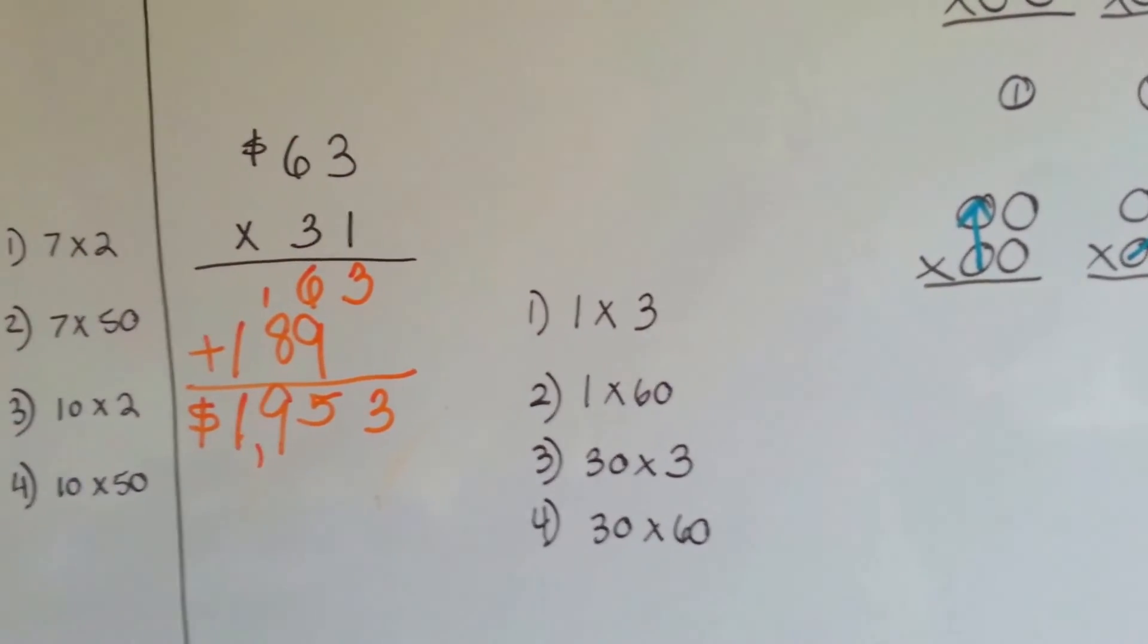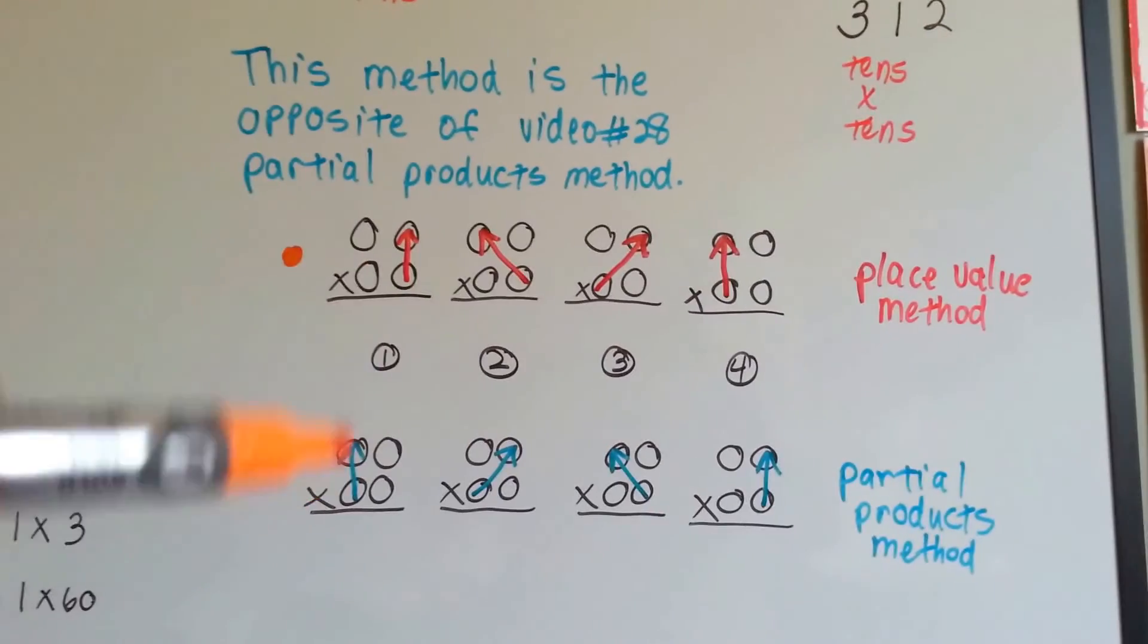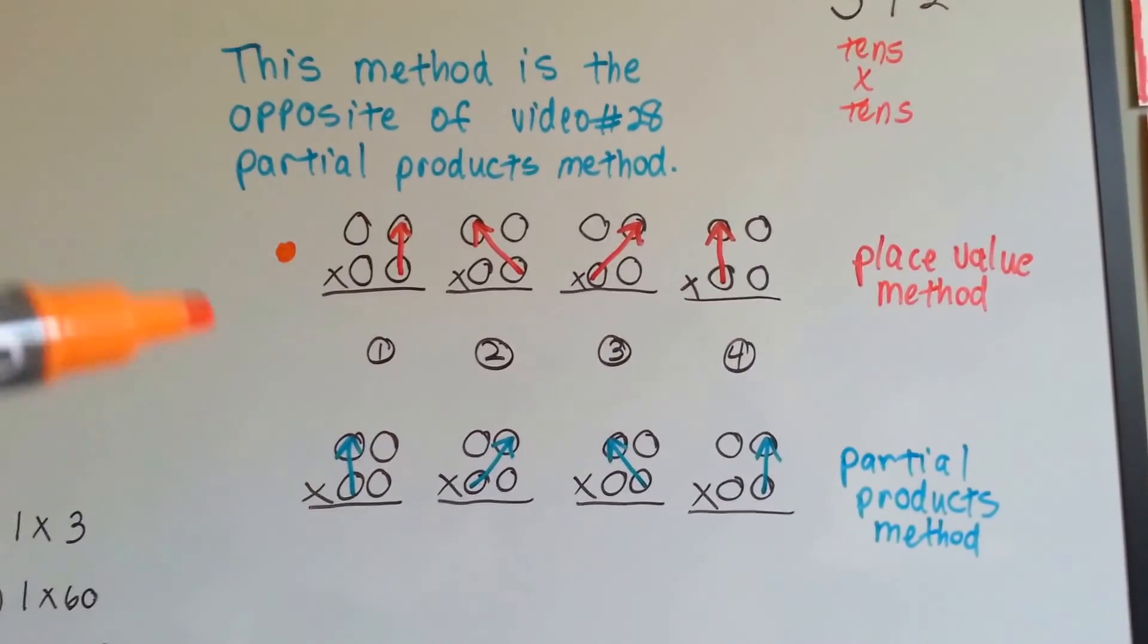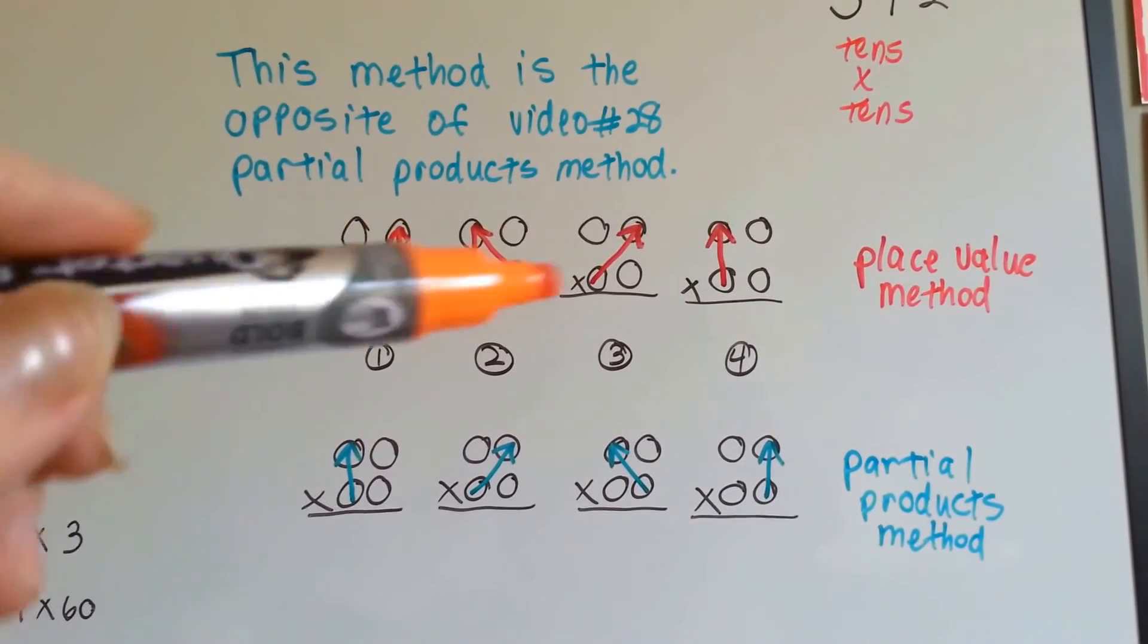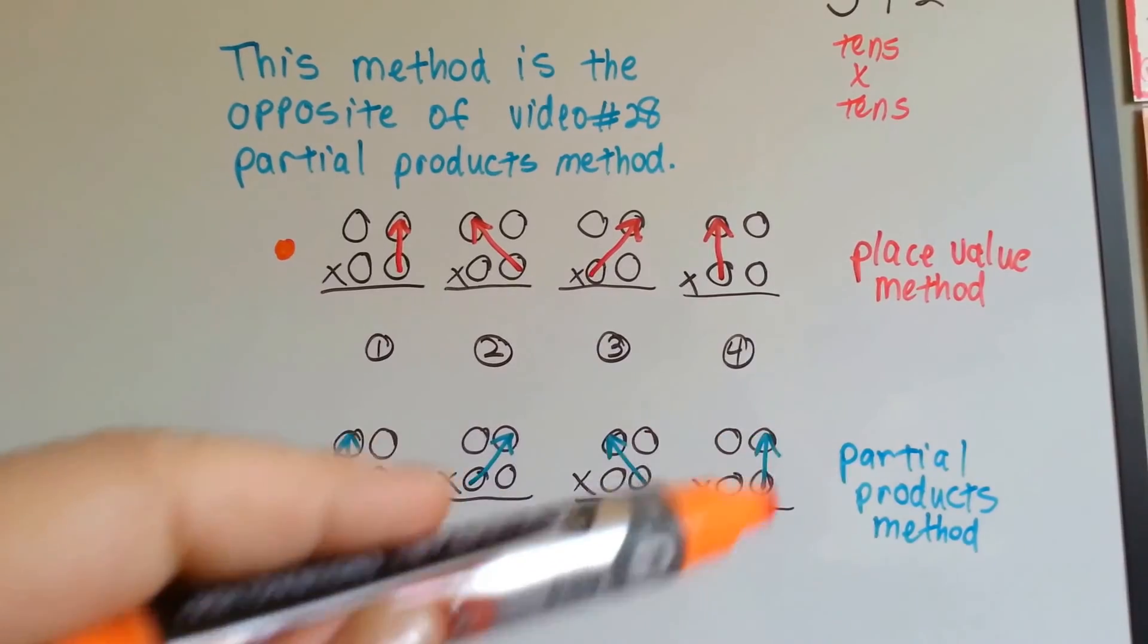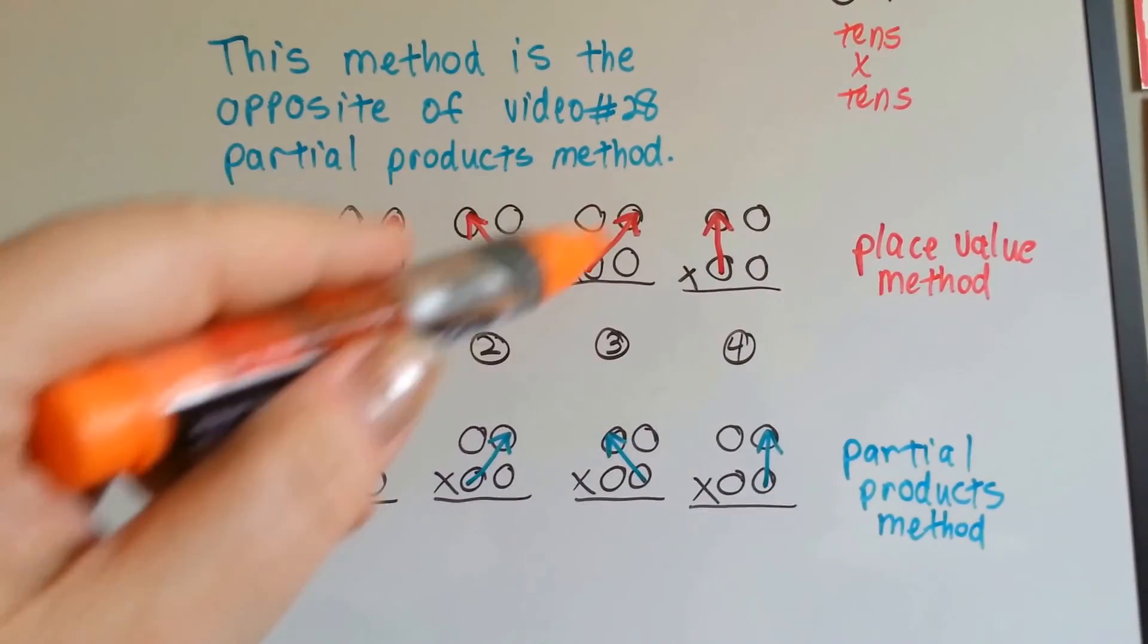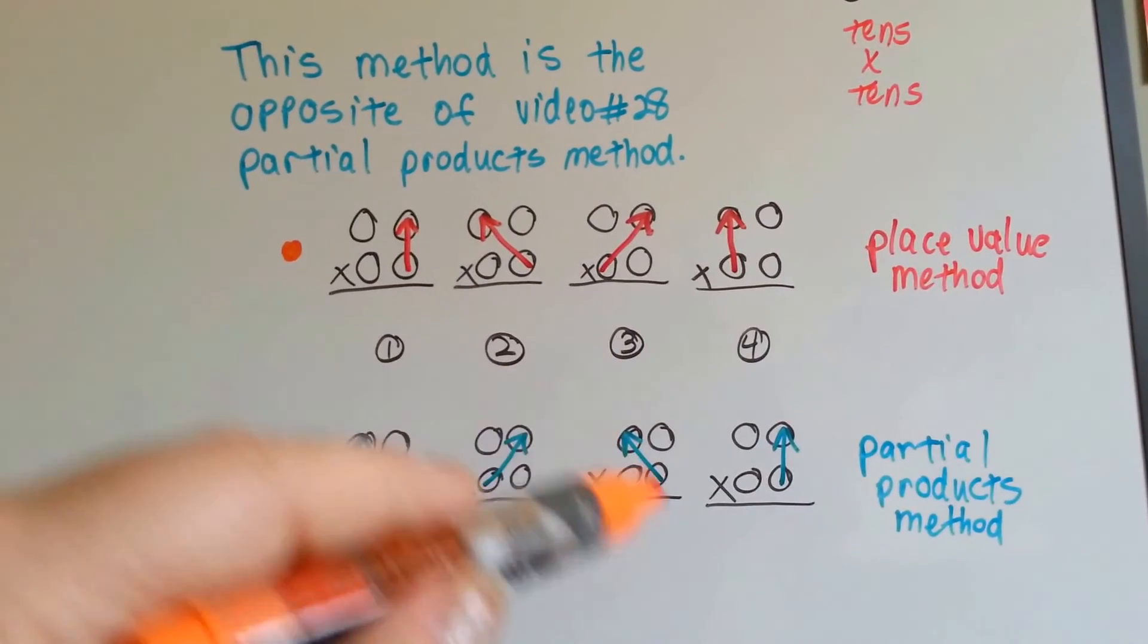This one starts on the inside and ends on the inside. This one starts on the outside and ends on the outside. You see that difference? This one makes a V, this one makes an upside down V. Do you see how that's happening?